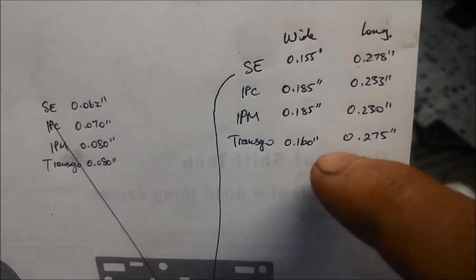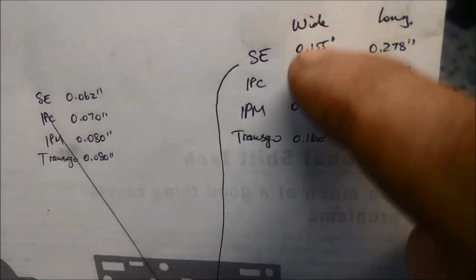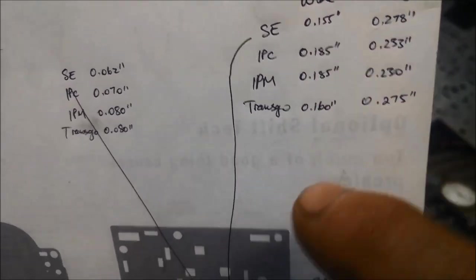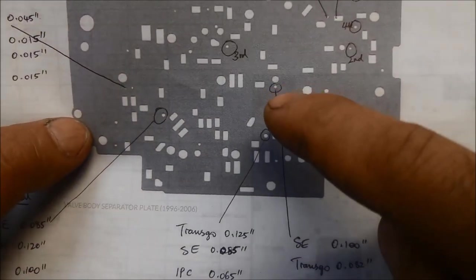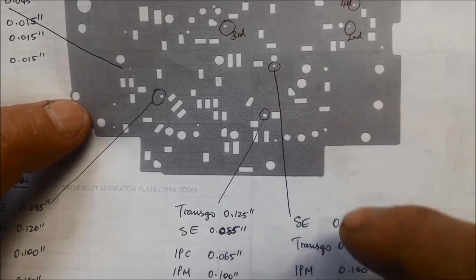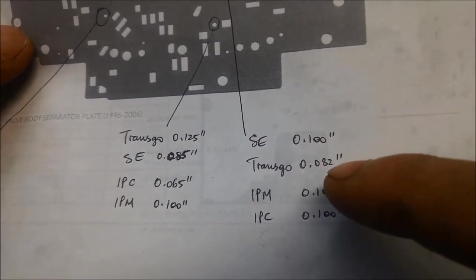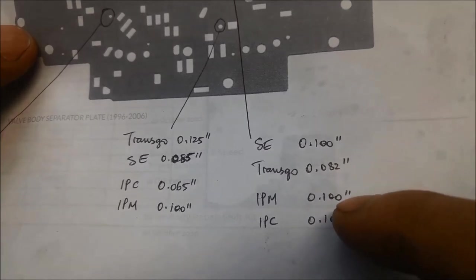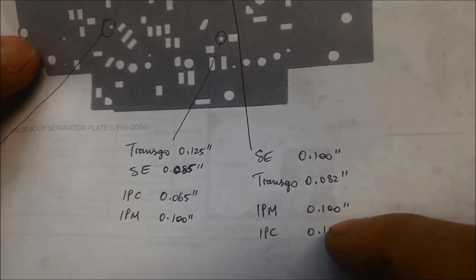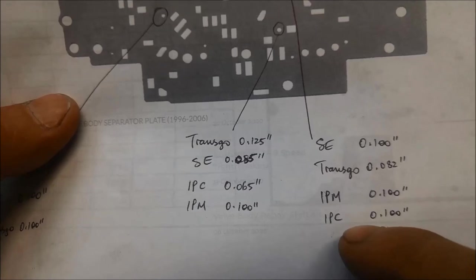And I've actually measured, you can work out the surface area of the hole, pi R squared. Or you can work it out by length by width. And it'll give you the surface area of that port. This one here. The SE, we had 100,000, TransGo have a slightly smaller hole. And we've got 100,000 on the other ones that come with the IPM and the IPC.